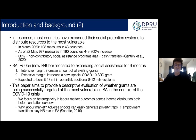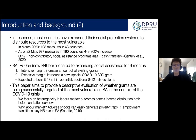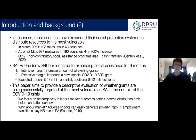This paper aims to use the NIDS-CRAM data — the first broadly representative data in South Africa to exist during the lockdown period — to evaluate whether the expansion of social grants was successfully targeted towards the most vulnerable groups: individuals in low-income households and those who experienced job loss between February and April 2020. We specifically look at differences in labour market outcomes across the household income distribution, both before and after lockdown.